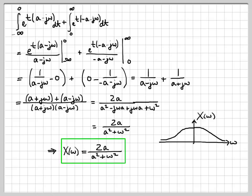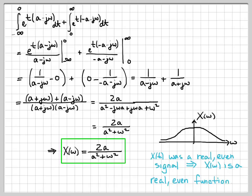If we plot X(ω), it looks something like this. It's a real and even function. Remember that x(t) was a real even signal, so we ended up with a Fourier transform X(ω) that is also a real even function. This will always happen when dealing with real even signals in the time domain — the Fourier transform will itself be a real even function.